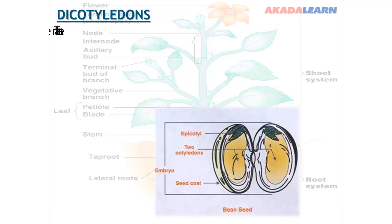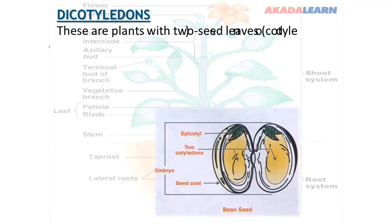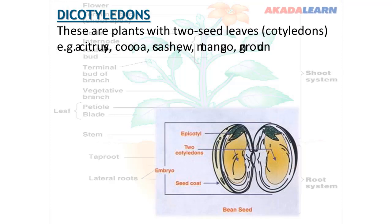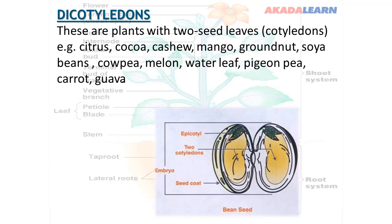Now let's look at the dicotyledons — these are plants with two seed leaves or cotyledons. Examples include citrus, cocoa, cashew, mango, groundnut, soya beans, cowpea (also known as beans), melon, pigeon pea, carrot, and many more. Dicotyledons are those plants whose seeds have two seed leaves, meaning you can easily split them into two.